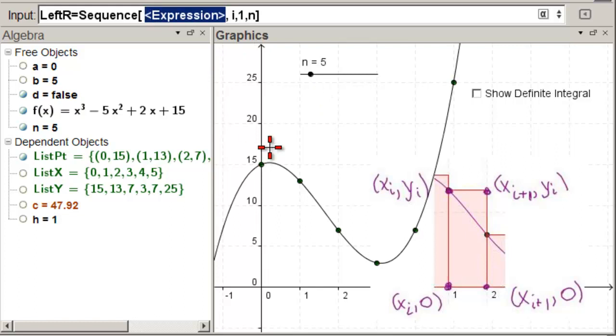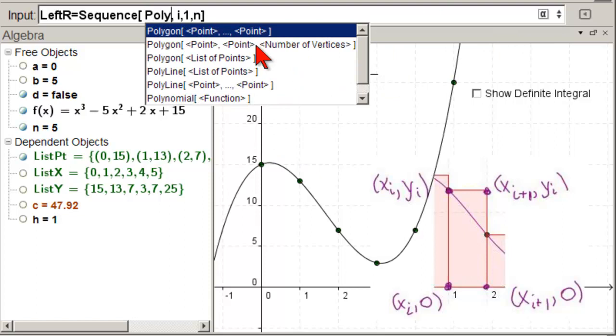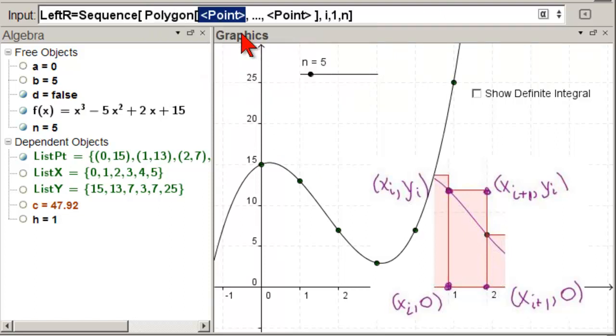Now, the second part is that we need a polygon. We're going to have a list of four points, the four corners. So, point one is X, I, zero. So, we're going to need a point. So, we put that. And then, we need to take the element from list X. Which element? The Ith element. And now, that's the first part of that point. What's the second part of that point? Zero. So, comma, zero. There's our first point.